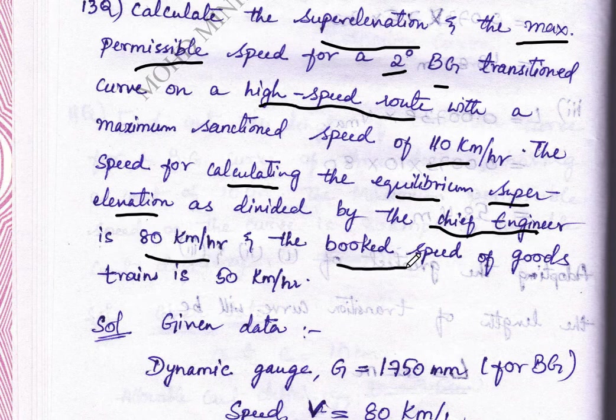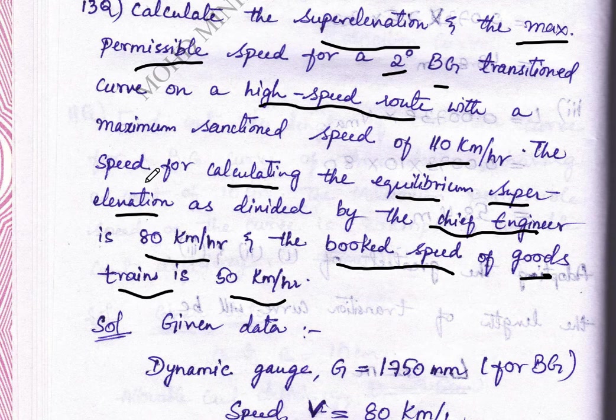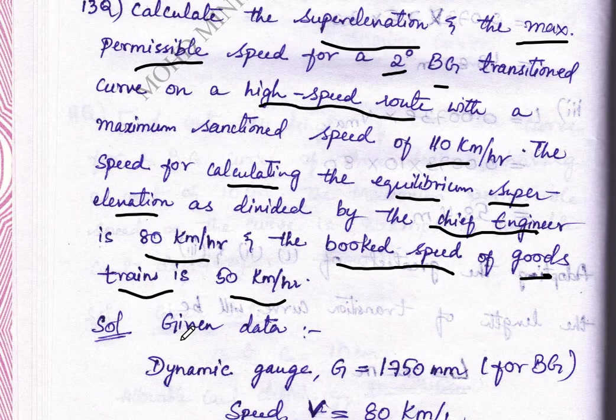So basically, we have to find the superelevation for these three speeds: 110 km per hour, 80 km per hour and 50 km per hour. Let's start with the solution.